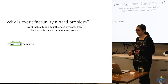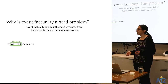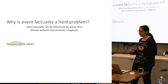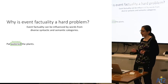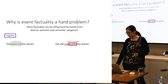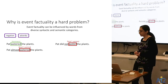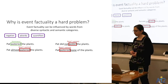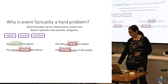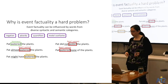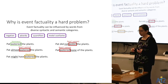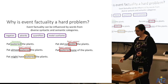Event factuality prediction is more challenging than just determining the presence or absence of negation. It can be influenced by words from many diverse syntactic or semantic categories: negation, adverbs ('Pat almost watered the plants'), quantifiers ('Pat watered none of the plants'), and modal auxiliaries ('Pat might have watered the plants'), which express uncertainty about whether the event happened.